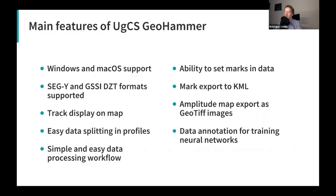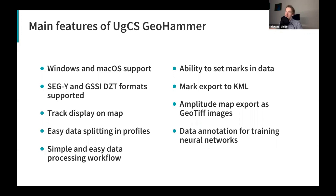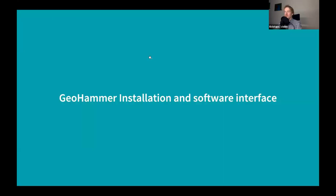Another feature is amplitude map export as GeoTIFF images. If you have anomalies at a certain level, you can create an amplitude map that highlights where anomalies are, then export as GeoTIFF to import into professional geotechnical software or back into GCS for flight planning. We're also working on data annotation for training neural networks — you can mark detected targets in the data to later train neural networks for more automated anomaly detection, though that's still in development.